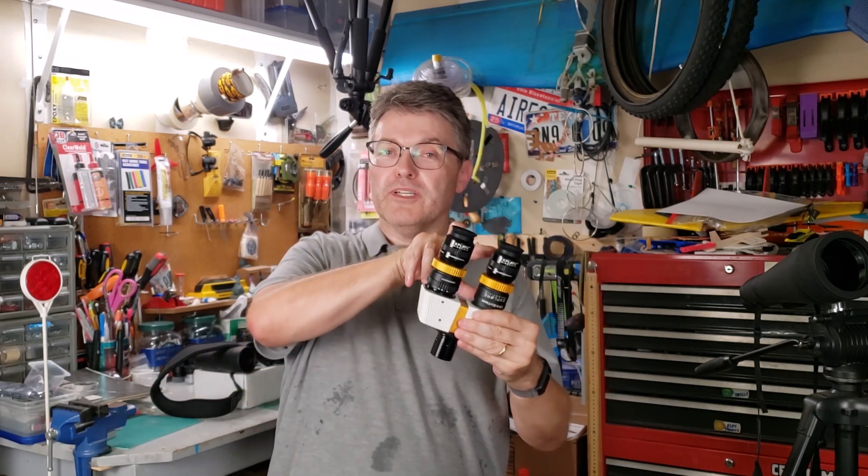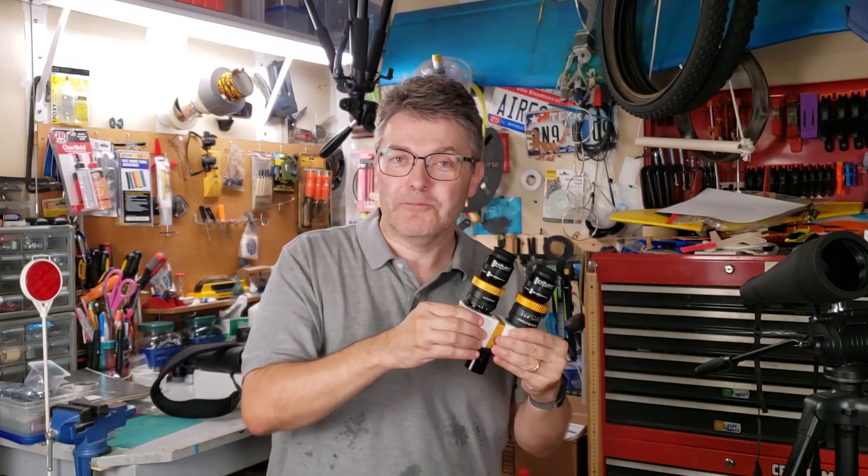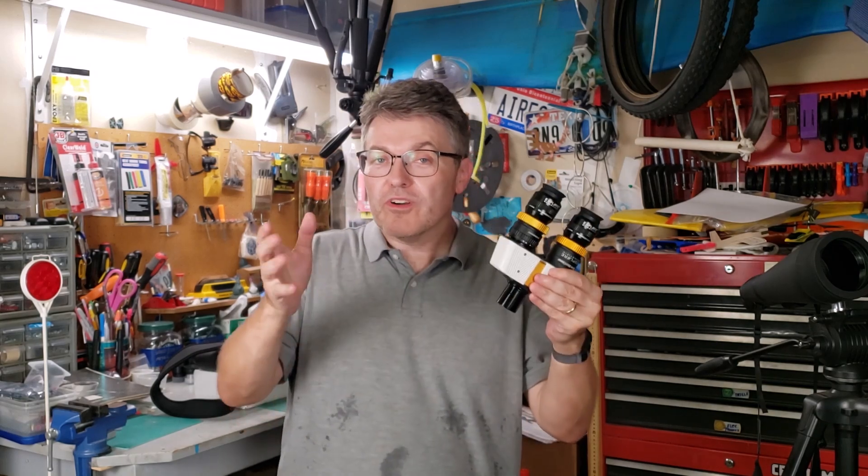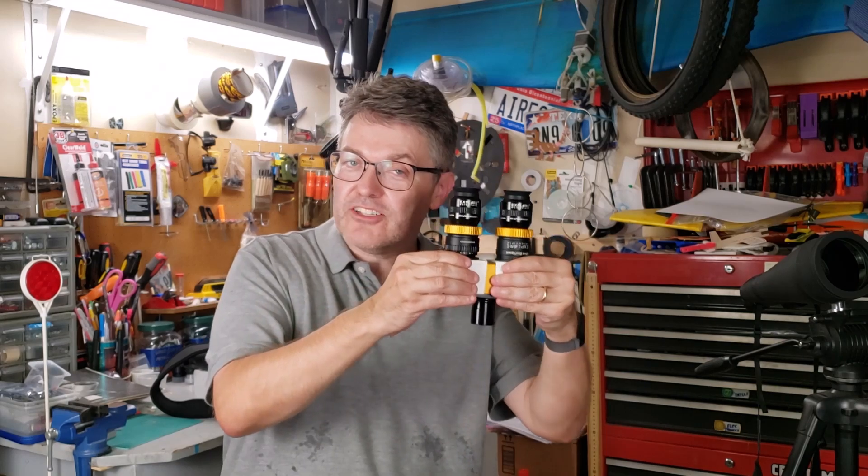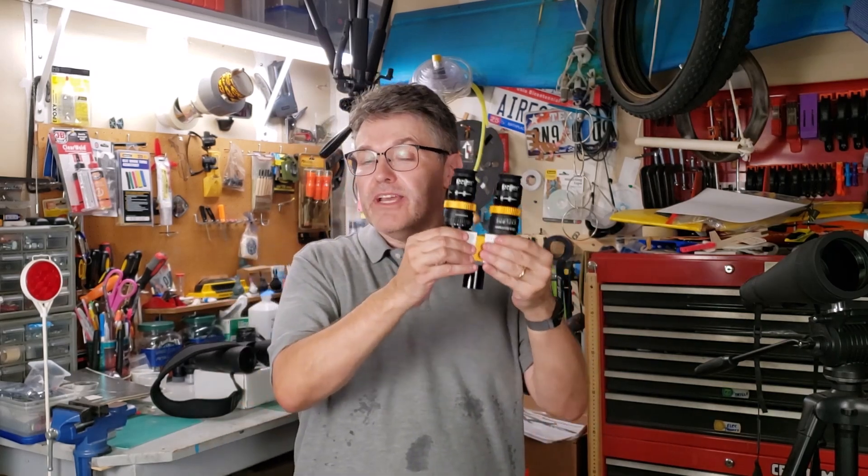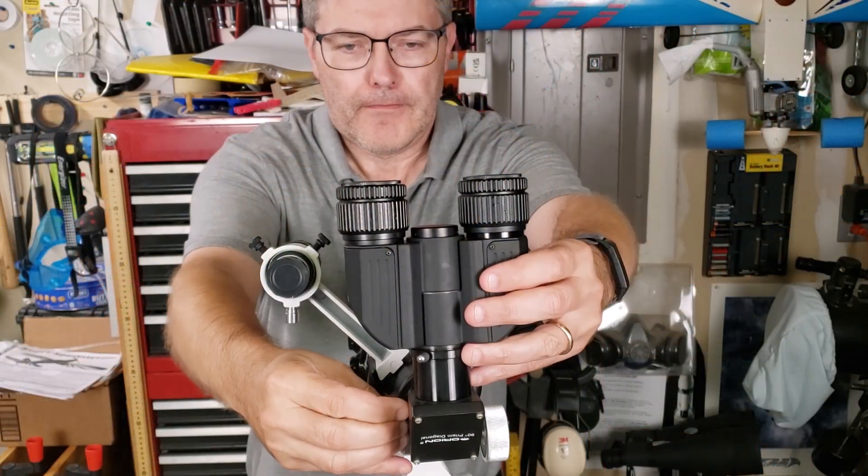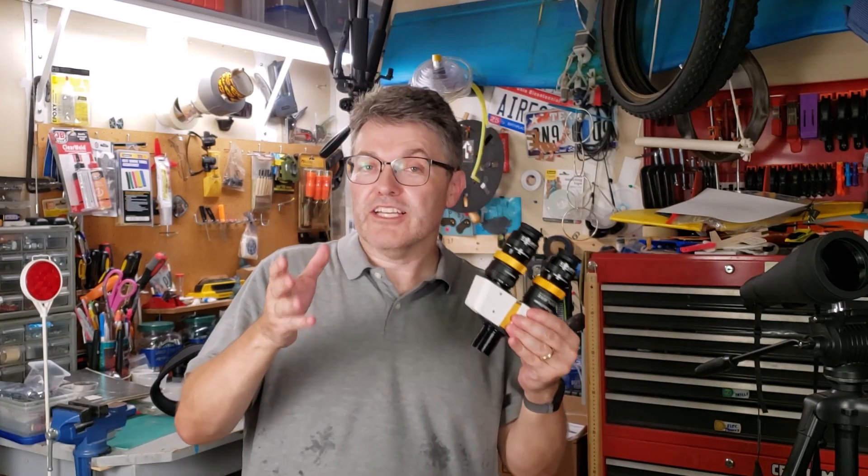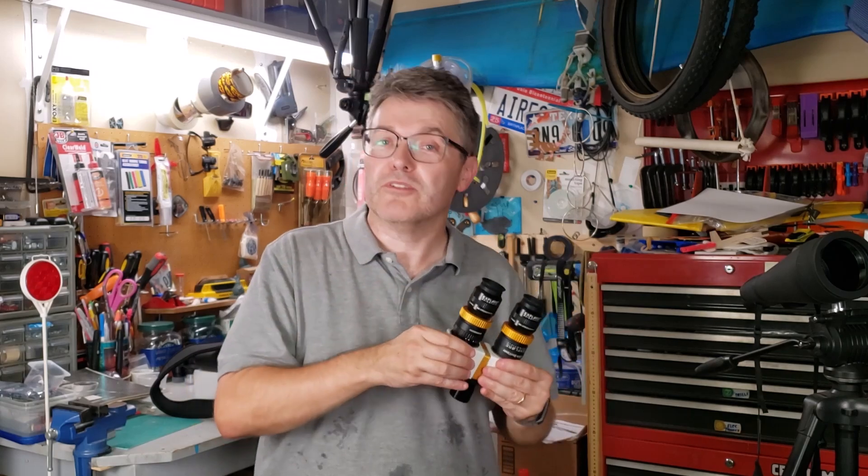Yes, bino viewers are pretty heavy, especially when you put two big, high-quality eyepieces in there. You're going to need plenty of counterweights on your telescope. One word of warning, if you're going to put these in a diagonal on the back of a refractor, make sure that the diagonal is in there pretty tight because you don't want this to slowly rotate over and fall out. That would be a financial disaster that you might not be able to recover from.